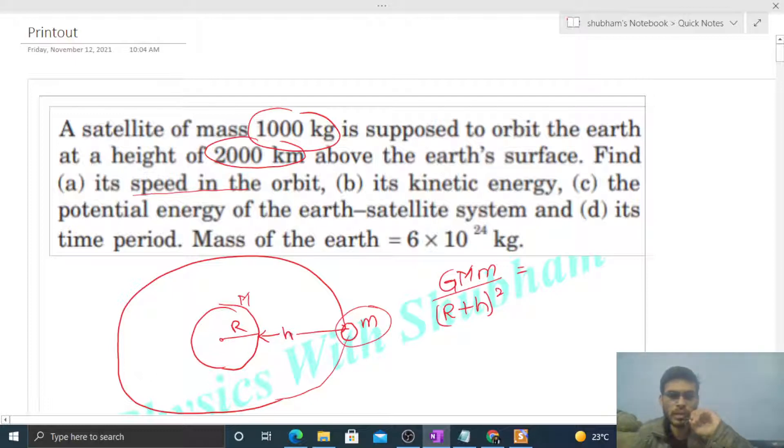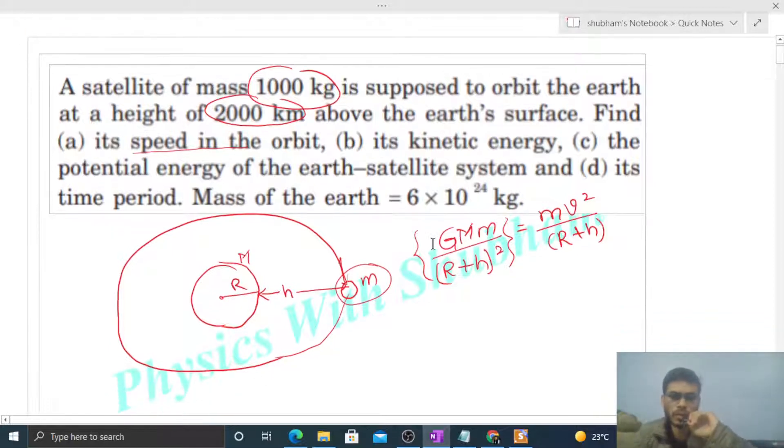That will be the centripetal force for this body. This gravitational force of attraction on the satellite will provide the necessary centripetal force, that is m times v squared divided by (R + h), where v is the speed of the satellite in this orbit, the orbital speed. So from here you can easily calculate the value of v, that will be square root of capital G times capital M divided by (R + h).